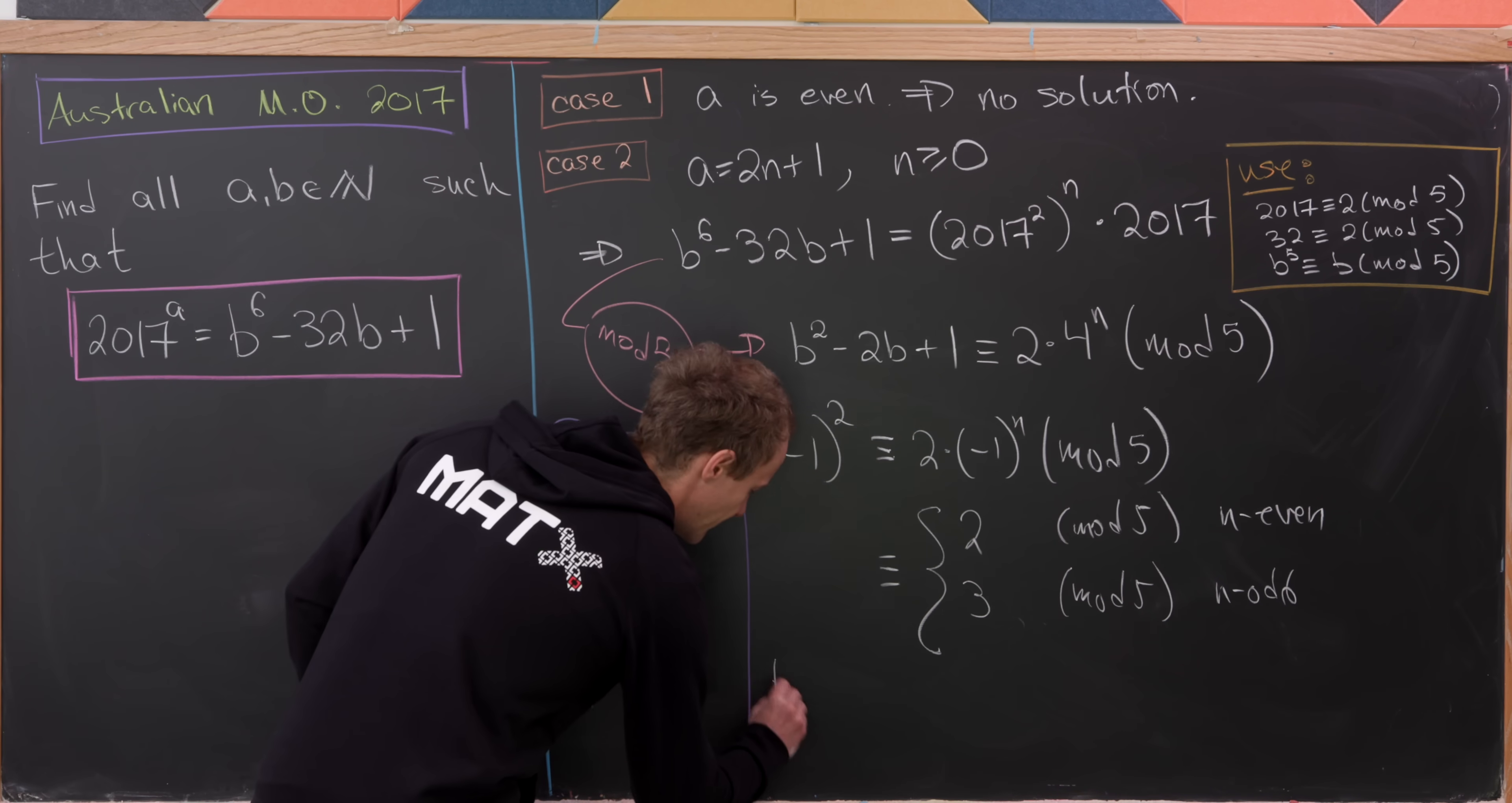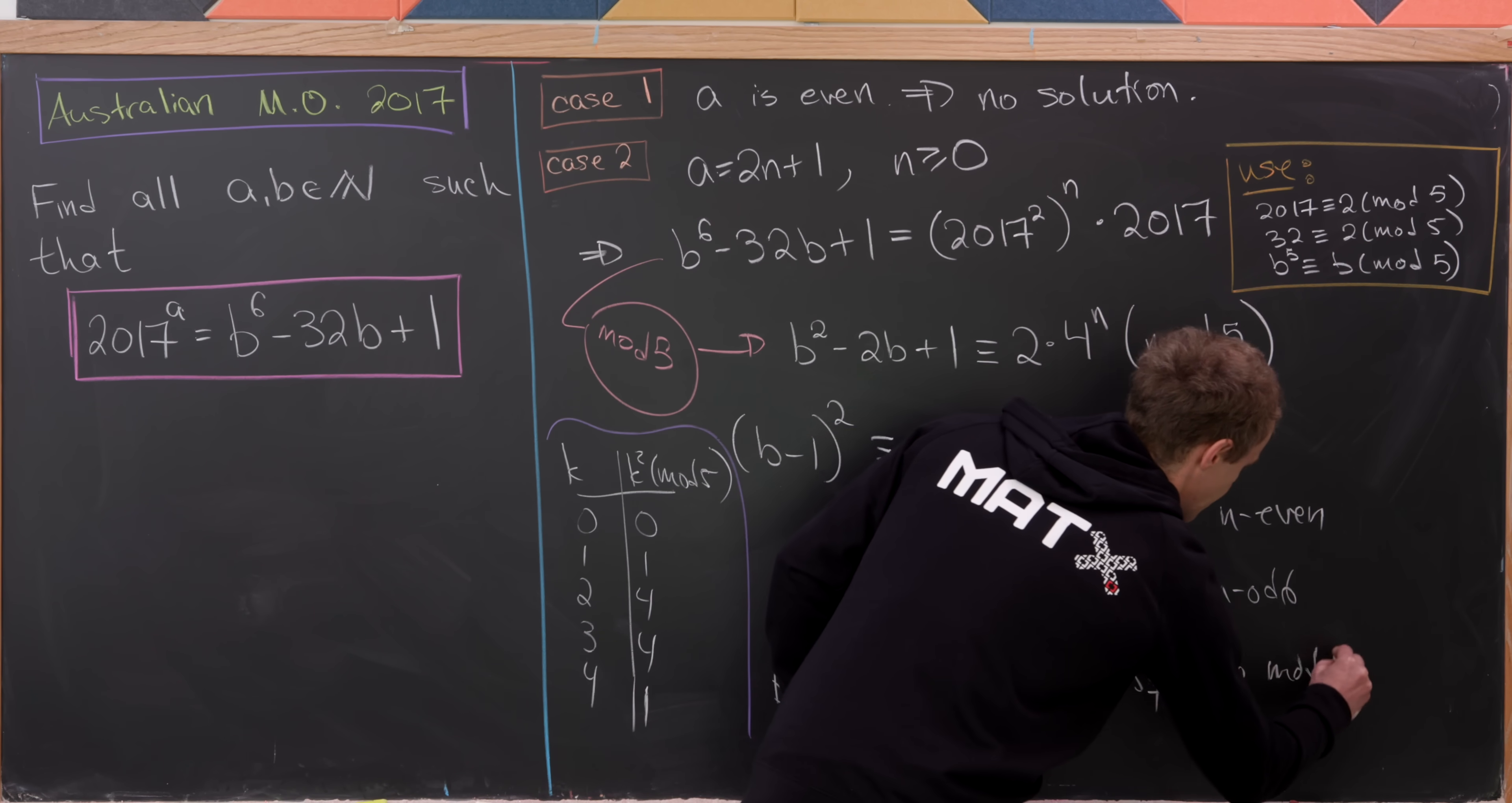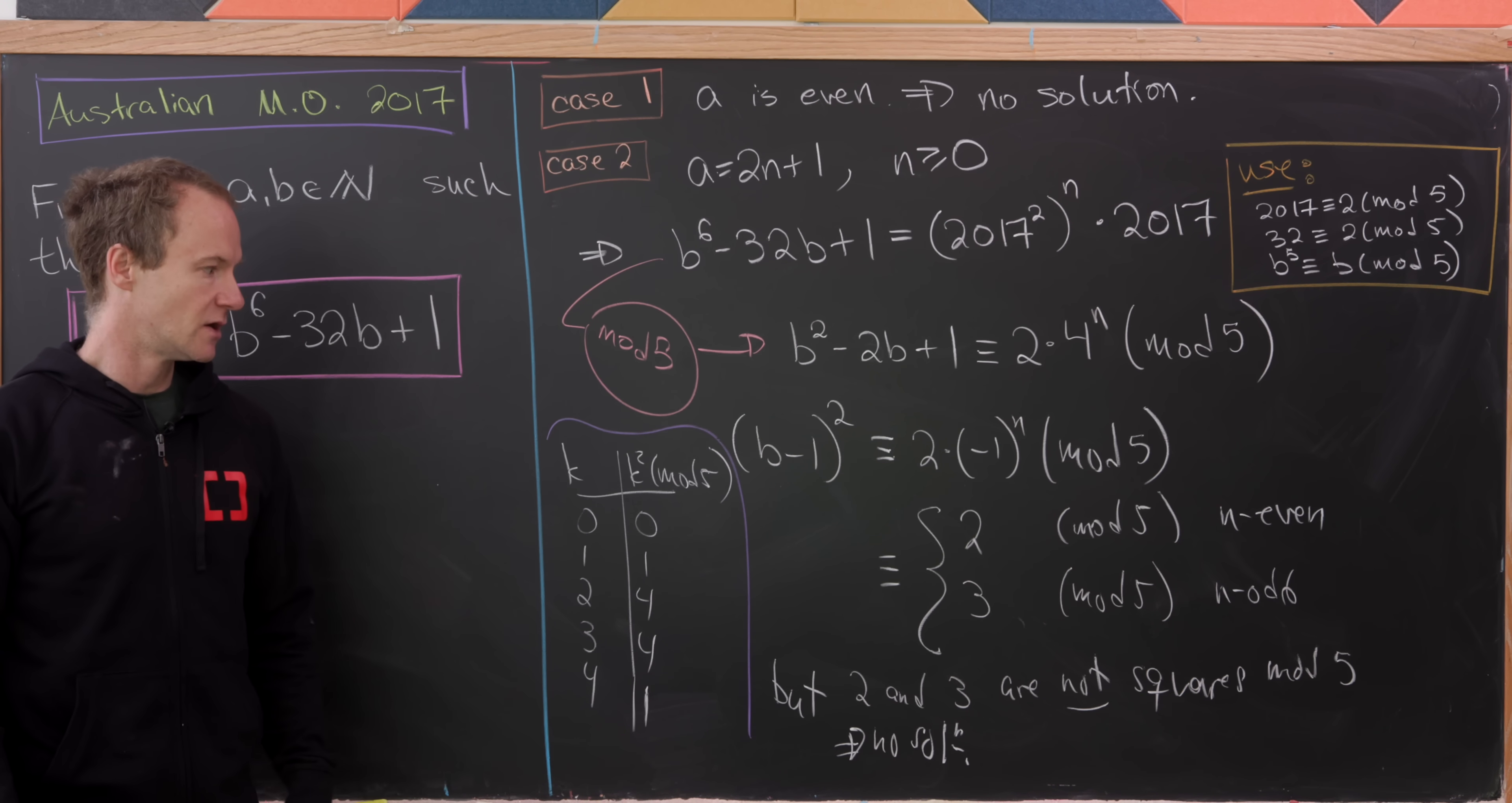So we could maybe finish this off with the following line. But 2 and 3 are not squares mod 5. So what does that mean? That means that we have no solution in this case either. Because any solution that we would get would imply that 2 or 3 was a square mod 5, which is, of course, impossible.